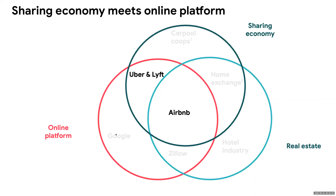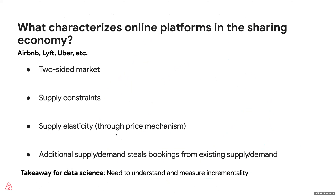Starting with the sharing economy meeting online platforms — companies like Uber, Lyft, Airbnb. One common challenge is that these are all two-sided markets. For Airbnb to exist, hosts need guests and guests need hosts. That's different from Google, which is sometimes also described as a two-sided market: searchers coming to Google don't need advertisers — advertisers need searchers — and the majority of searchers are not actually looking for ads. Here it's really that one side of the market absolutely needs the other, and Airbnb needs both to exist.